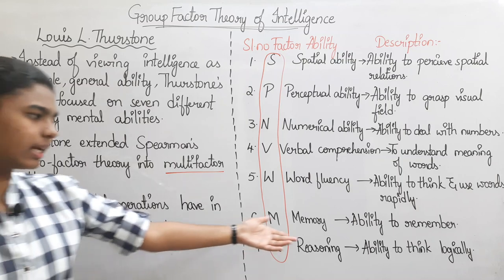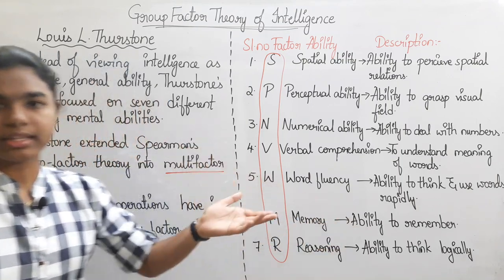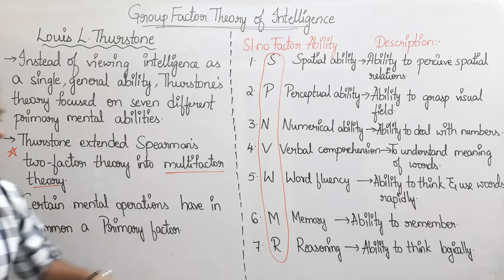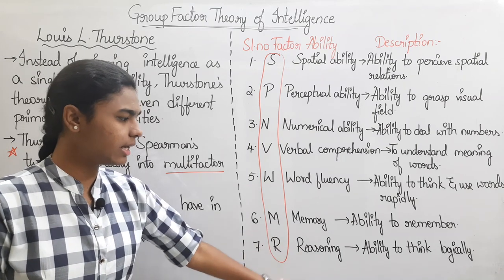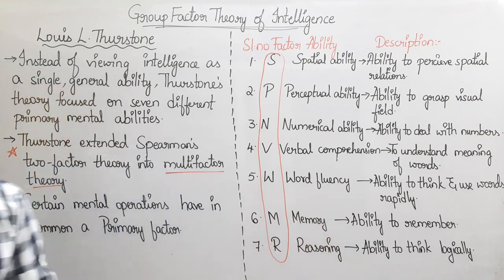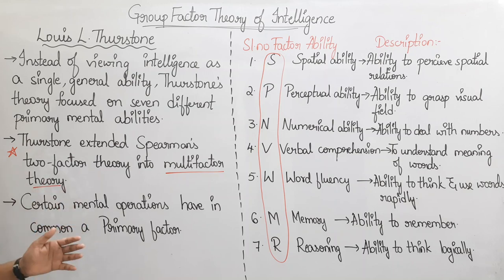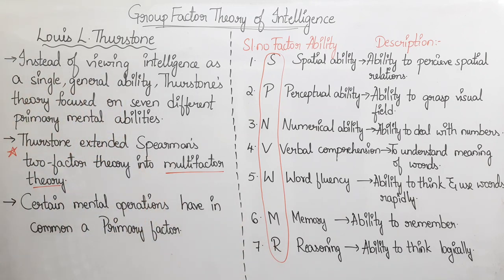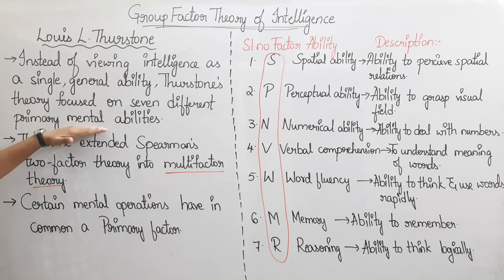The next one is Memory — the ability to remember. And Reasoning — the ability to think logically, which means using logic and reason. So this covers the Group Factor Theory of Intelligence with seven different primary mental abilities.